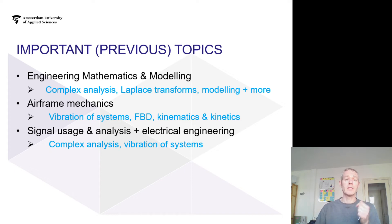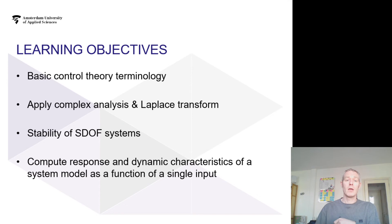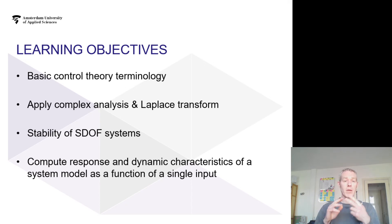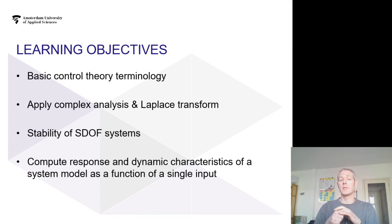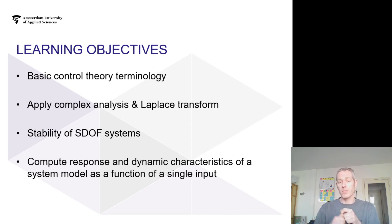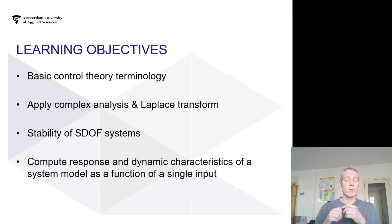We will be using all these topics to analyze systems in terms of behavior and to model control systems so that we can ensure our systems exhibit the behavior we want. The learning objectives of Automated Flight are: understanding basic control theory terminology, applying complex analysis and the Laplace transform, being able to calculate the stability of single-degree-of-freedom systems, and computing response and dynamical characteristics of a system modeled as a function of a single input. We will be looking at simple systems, but most of the theory also translates to larger and more complicated systems.